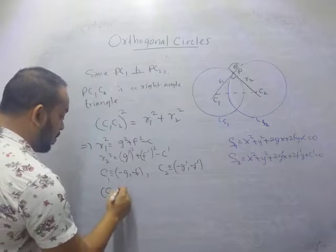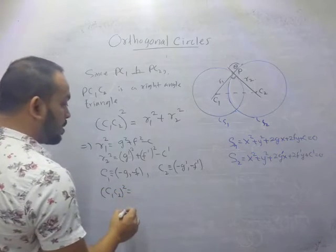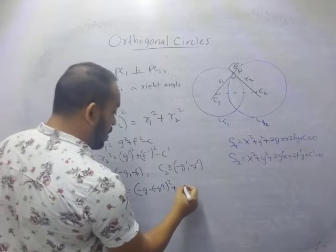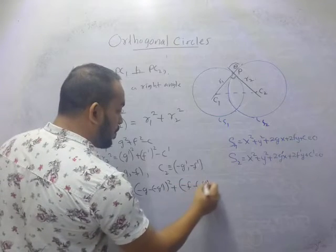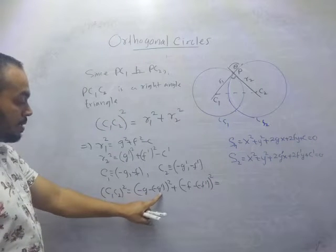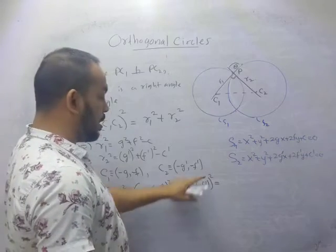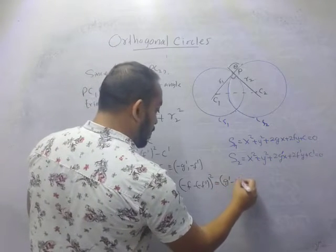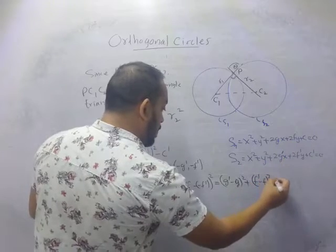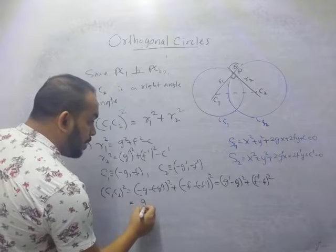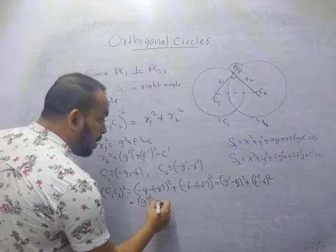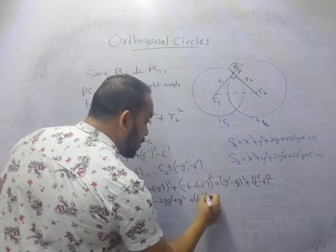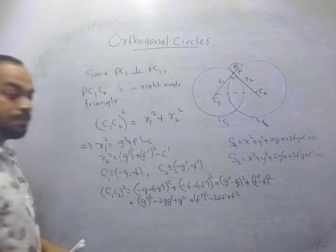Now let's find c1c2². We don't need to write the square root. c1c2² would be (−g − (−g'))² + (−f − (−f'))², which gives (g' − g)² + (f' − f)². Expanding this out: g'² − 2gg' + g² + f'² − 2ff' + f².